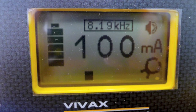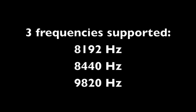The transmitter, when turned on, will recognize that it is connected to a clamp. A transmitter using a clamp only supports three frequencies, 8192, 8440, and 9820 Hz.